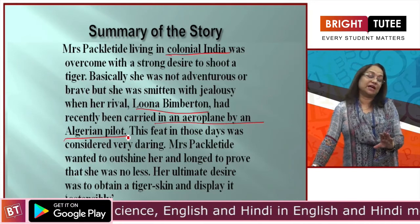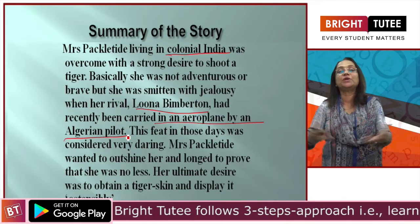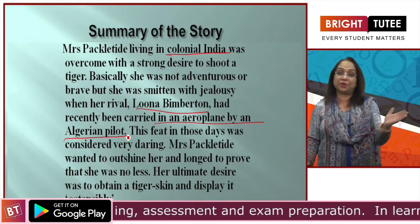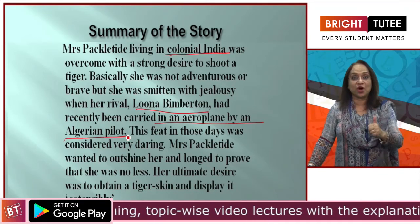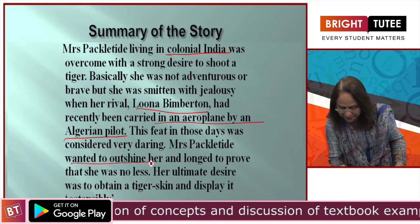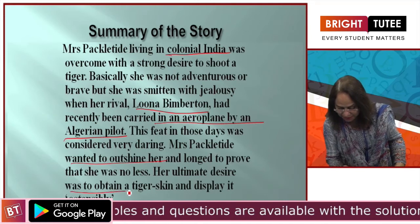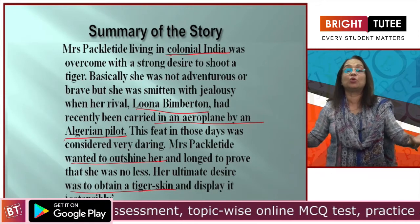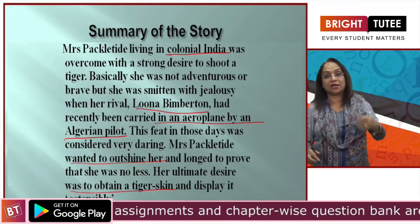After shooting the tiger, what did she want to do? One — take out the tiger skin and lay it out to show to people. When people would come to visit her, they would see the tiger skin on the floor and know she was a brave woman who had hunted a tiger. And two — she wanted to give a present to Luna Bimberton: the tiger claw. So she wanted to outshine Luna Bimberton and display the tiger skin ostensibly, like a big show-off, so that people would know that she had hunted a tiger.